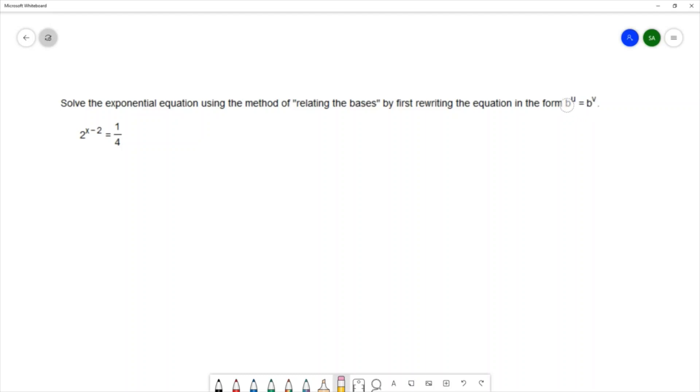We want to write the equation so that it has the same base on both sides so that we can apply this relating the bases method, or sometimes it's called the one-to-one property.